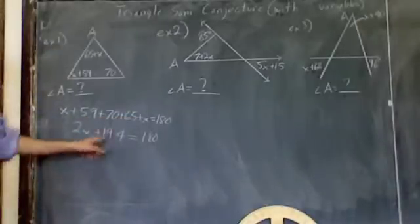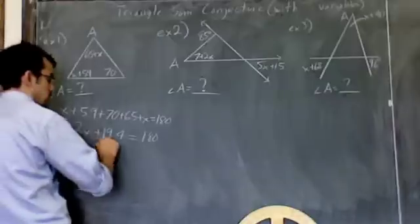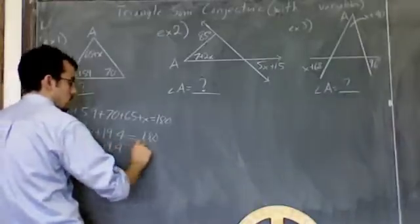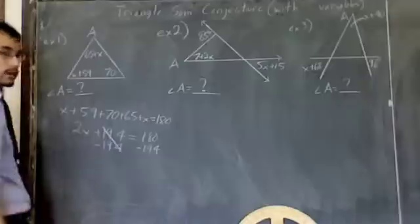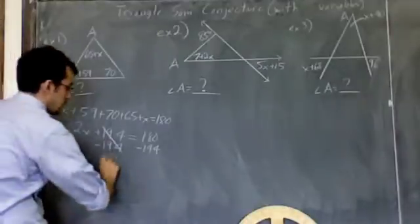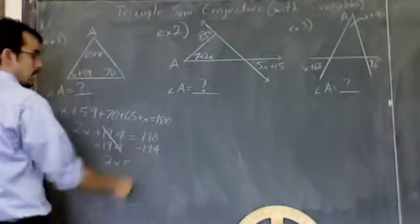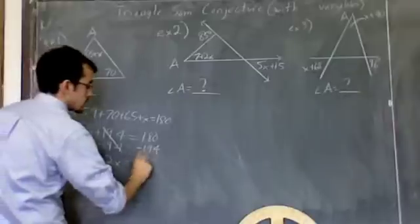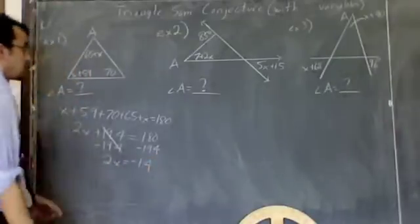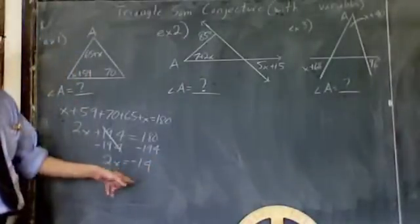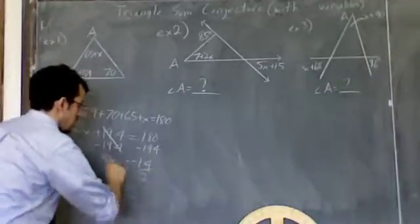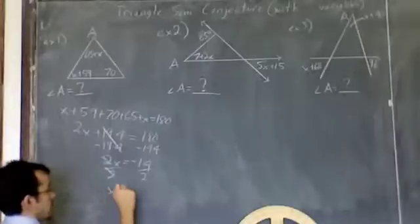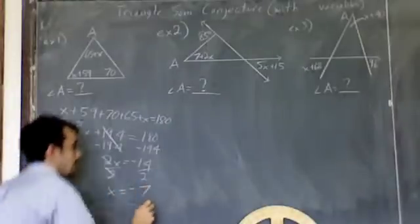At that point, since I'm adding 194, I'll subtract it. Make sure you do it to both sides, canceling out the 194s. 2x comes down. 180 minus 194 is negative 14. And then I still have to get x alone. This is what 2 times x is, so I divide by 2. By dividing by 2, I find out that x is negative 7.